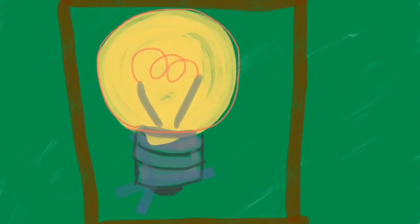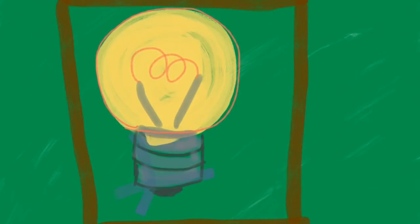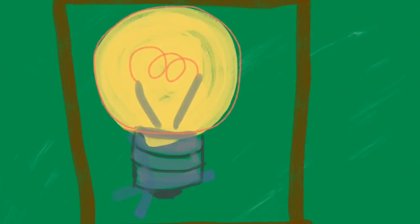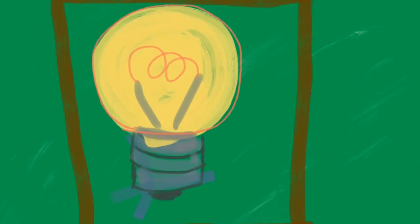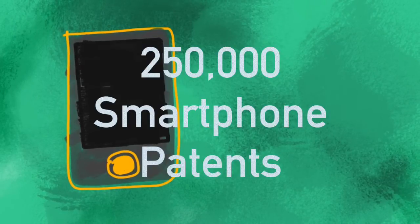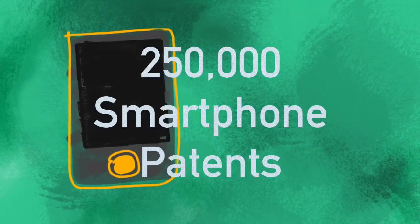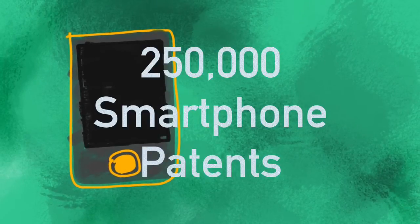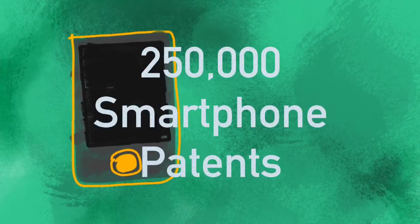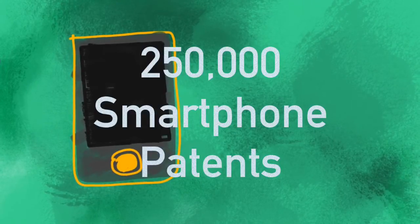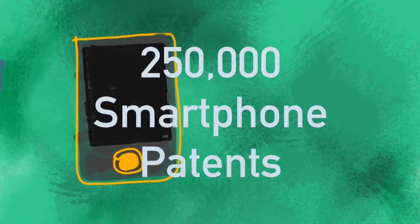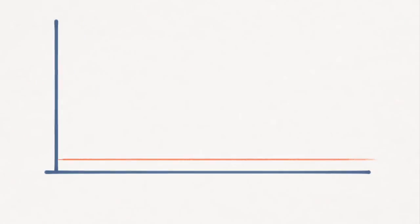When IP rights are too strong, we start to harm the commons for future creators and start to limit the ability of the public to get access to the materials they need to learn and to live their lives. All creative activity builds on the past. This means that if intellectual property rights are not balanced — that is to say, they are granted too easily, they last too long, or they are too strong in their enforcement — then we create a situation where it becomes too difficult for creators, inventors and general members of the public to access the information that they need to live their lives. In economic terms,